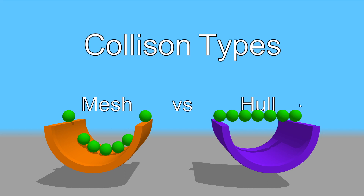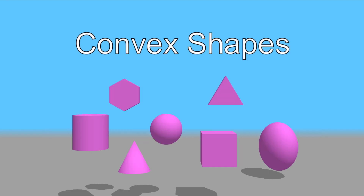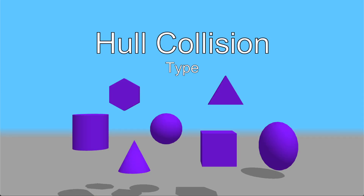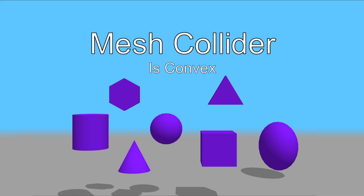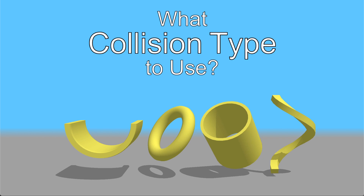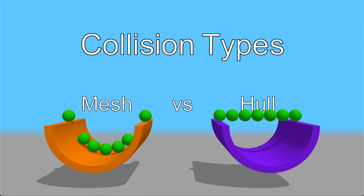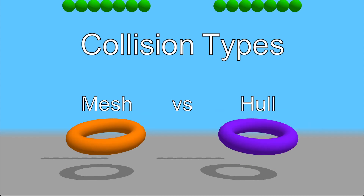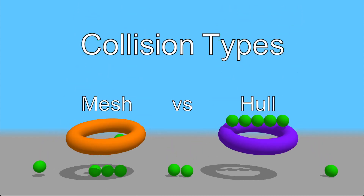Now let's look at where we would use hull and where we would use mesh. For all convex shapes, use the hull collision type. In Unity you can do that by setting convex to true inside a mesh collider. But the question of what collision type to use for a concave shape is not that simple. Looking at the previous demonstration of both types on a concave shape, you might think you just use a mesh collider, but that's not always true because the mesh collision type has its own limitations.